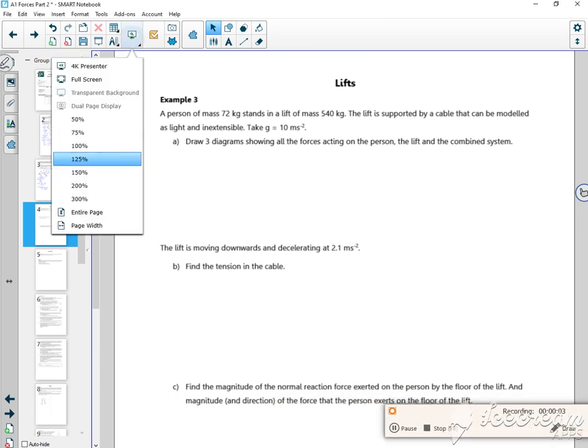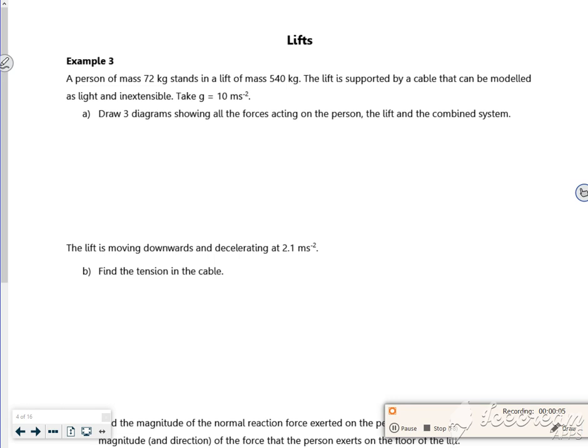Right, so we're on lifts now. A person of mass 72 kg stands in a lift of mass 540 kg. The lift is supported by a cable that is modeled as light and inextensible.